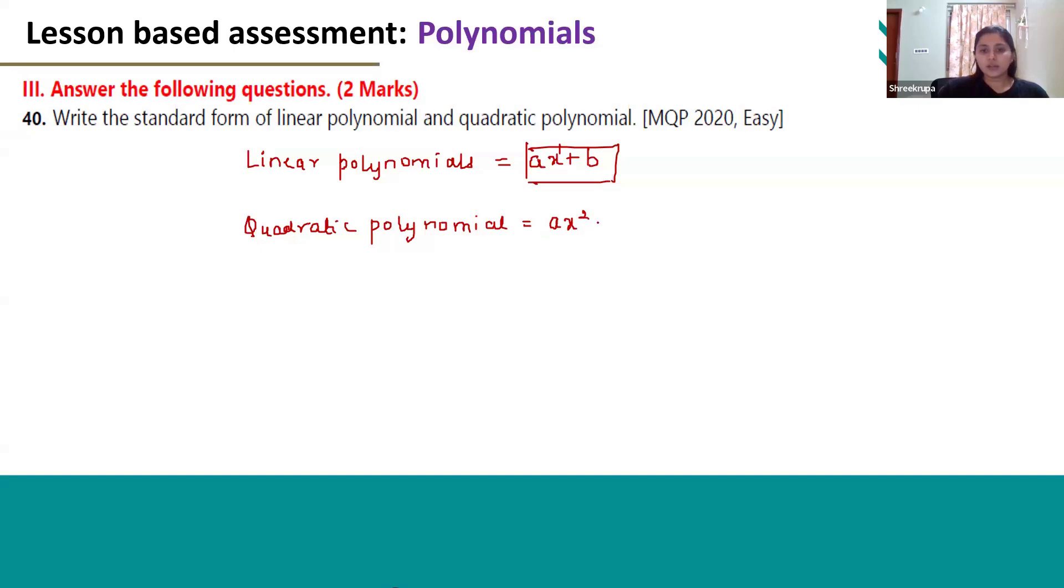So, the general form is ax square plus bx plus c. This is the general form or standard form of quadratic polynomial.